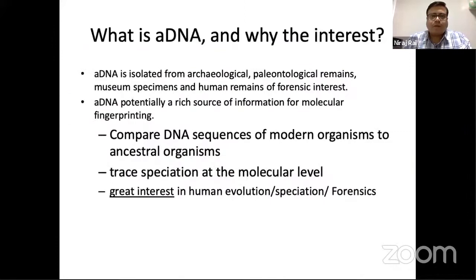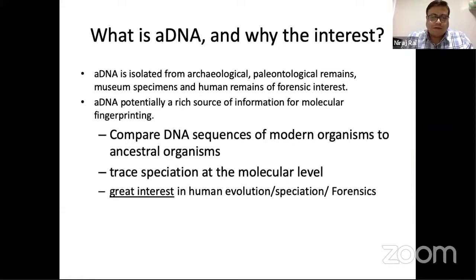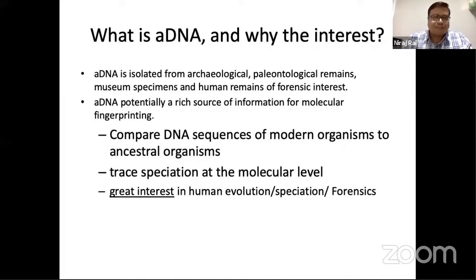So what is ancient DNA and why are we interested in it? Ancient DNA is isolated from any archaeological, paleontological remains, museum specimens, and human remains of forensic interest. Samples consist of bone, hair samples, skin samples — any biological samples which are degraded but not completely mineralized in the form of fossils. In a country like India, we can extract DNA up to some time period, which we call ancient DNA. Then we compare this ancient DNA with the modern database to interpret the results.